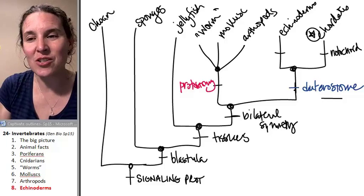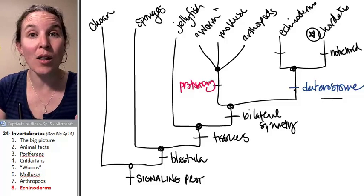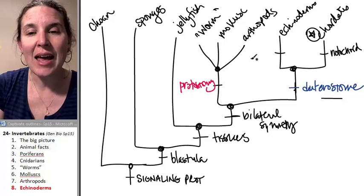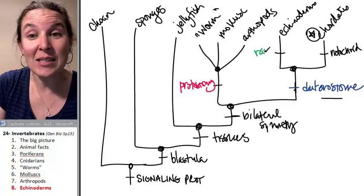And you know what? This is really interesting, and this is a good example of a characteristic that disappears and then comes back. They are radially symmetric.